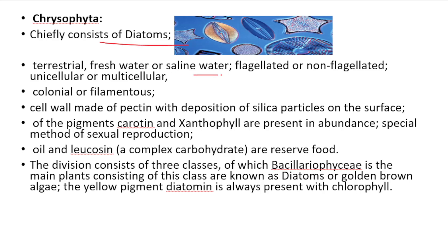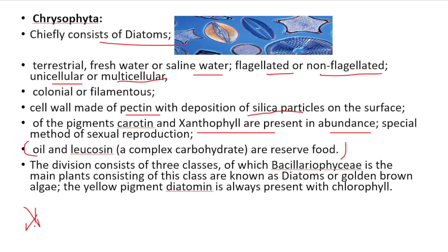Chrysophyta (diatoms): Found in fresh water and saline habitats. May be flagellated or non-flagellated, unicellular, multicellular, colonial, or filamentous. Cell wall is made up of pectin with a deposition of silica particles on the surface. Pigments are carotene and xanthophyll, present in abundance. Reserve food is oil and glucose.